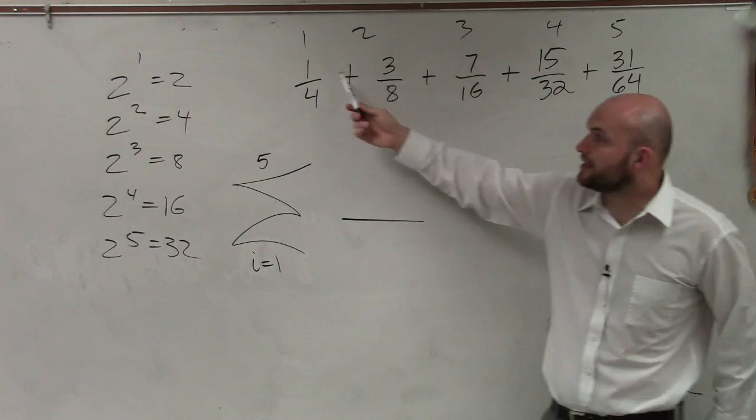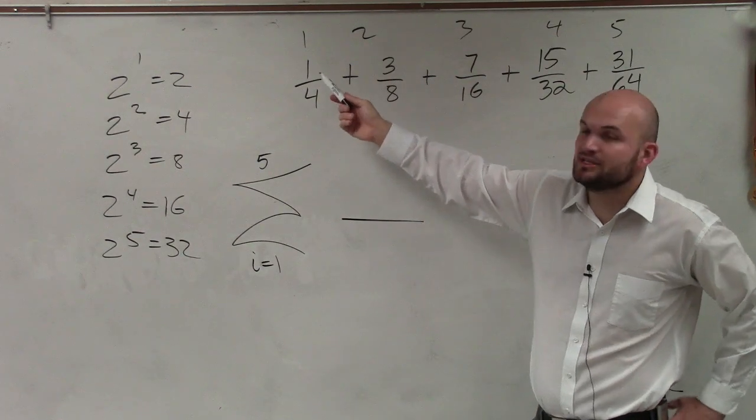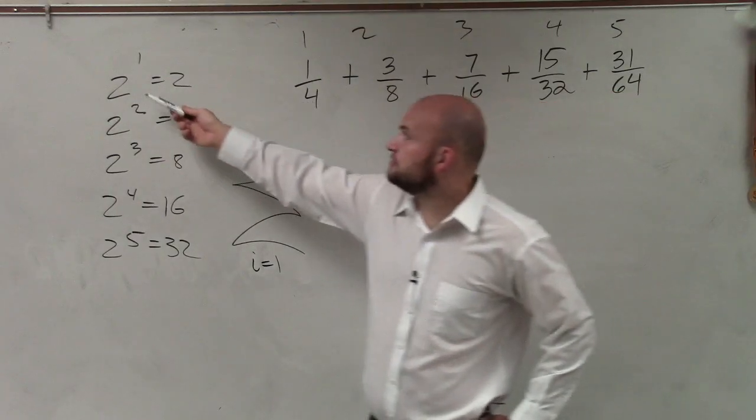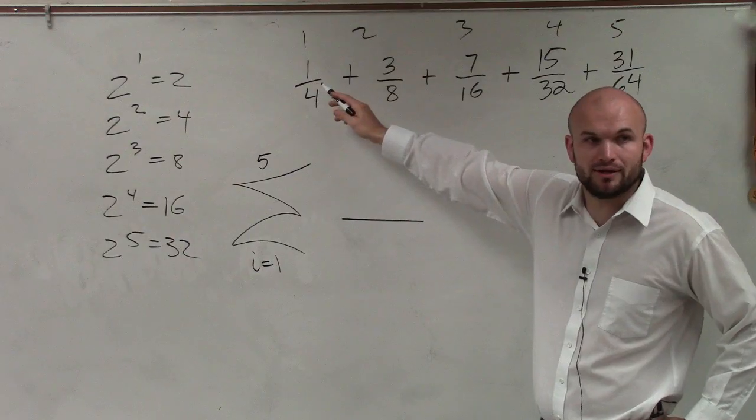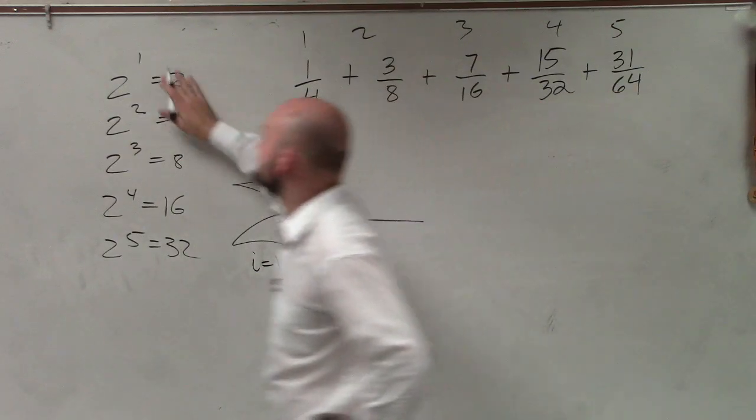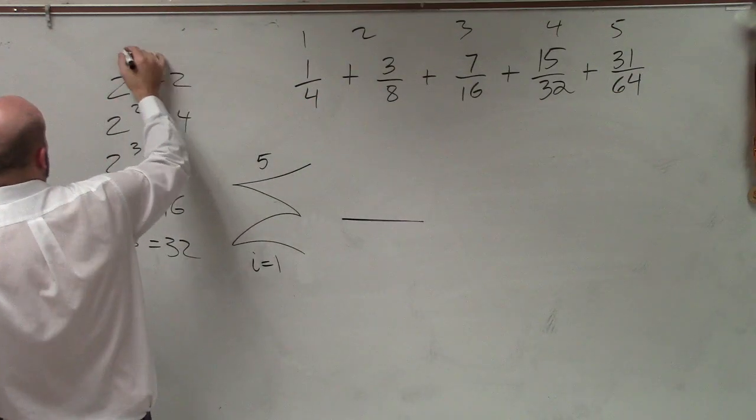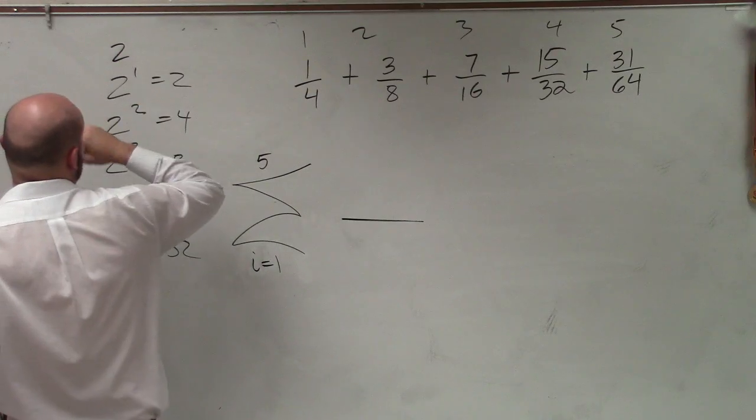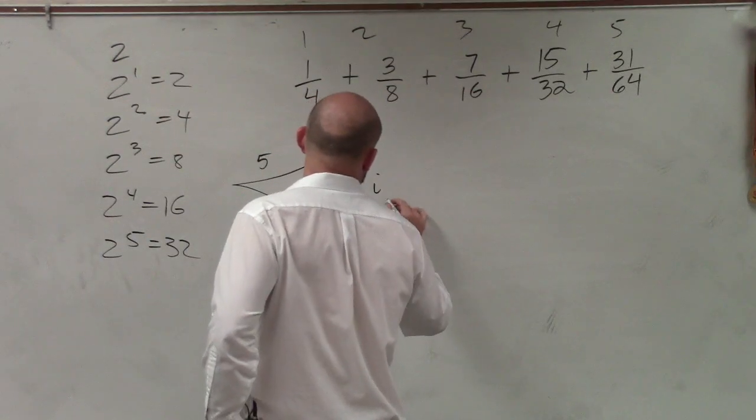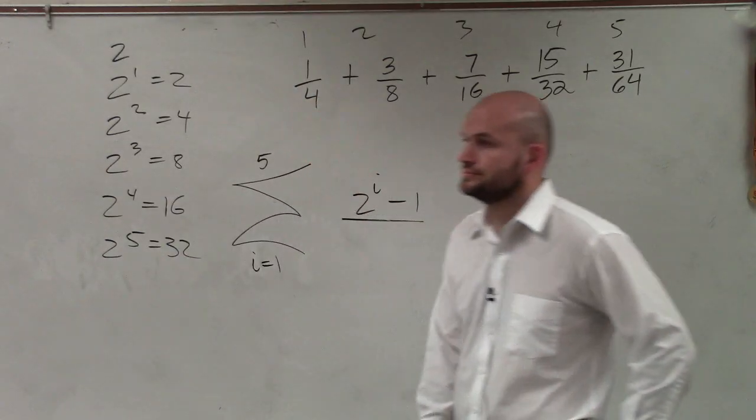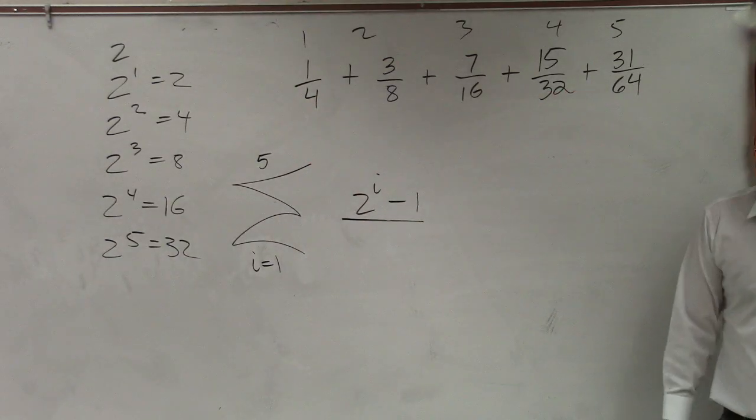But now here, this is going to be 2 to the first power. 2 to the first power equals 2. So therefore, I need to get this to be 1. So it'd be 2 to the i minus 1. Does that make sense?